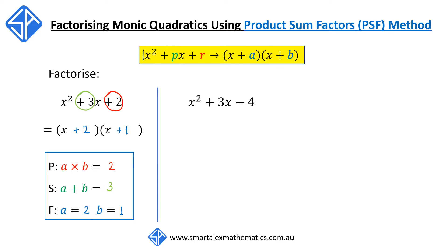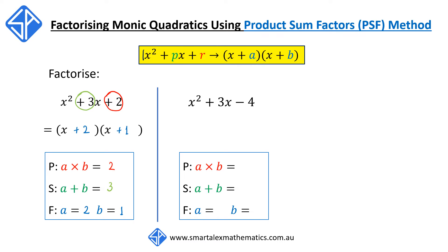Our next example is x squared plus 3x minus 4. We're going to use the same PSF method. P stands for product — we're going to look for two numbers a and b that multiply to give the constant negative 4. S stands for sum — the two numbers a and b need to add to give 3.